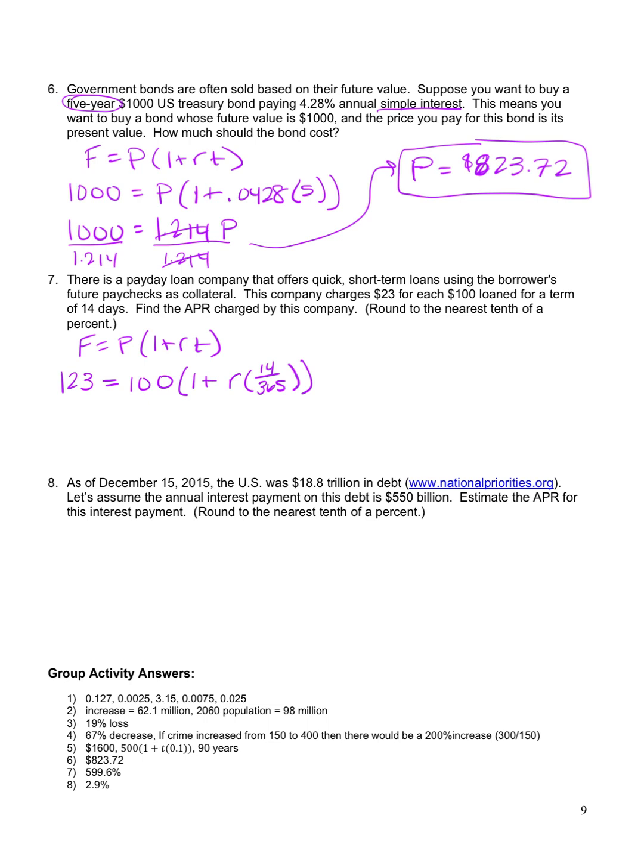And it's easier if you change that fraction to a decimal. So we have 123 equals 100 times 1 plus, and 14 over 365 is 0.0384R. Okay, so now to solve for R, I'm going to start by dividing both sides by 100. And I get 123 over 100 is 1.23 equals 1 plus 0.0384R, because my 100's just cancelled. Subtract 1 from both sides. So 1.23 minus 1 is 0.23. When I subtract 1 from the right, the 1 goes away, and I have 0.0384R. And then divide both sides by 0.0384.